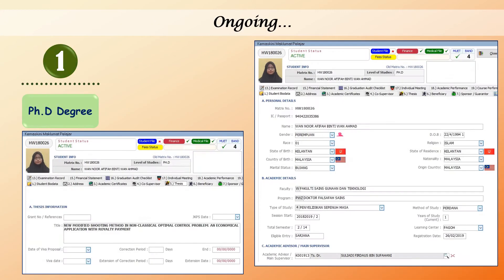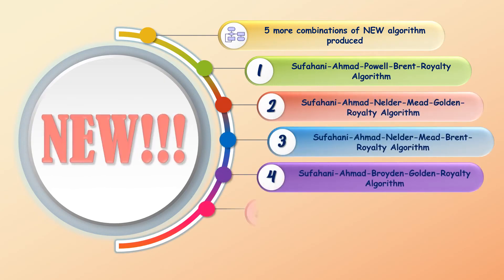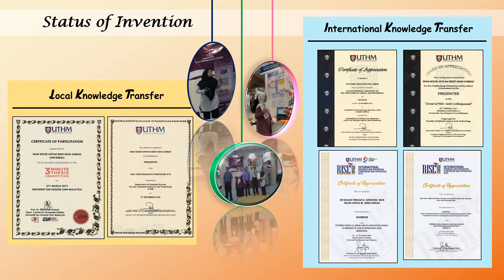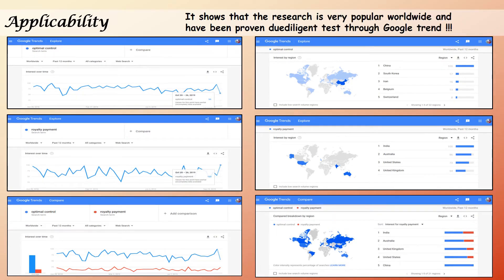The project is still ongoing at PhD degree level. We produced five more combinations of new algorithms, and the patent application is in progress. The knowledge of the project has been presented at local and international levels. The results of the project are optimal at the designated time frame, and the different methods applied produced accurate optimal solutions.